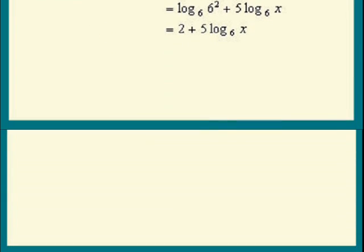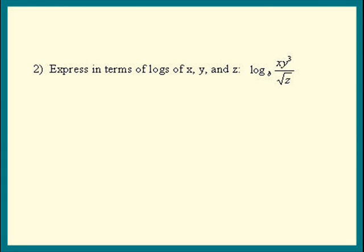In example 2, we have log of x times y cubed divided by the square root of z. That quotient means the quotient rule is our first step. The quotient rule tells us the log of a fraction is the log of the top minus the log of the bottom, so we get log of xy cubed minus the log of square root of z.